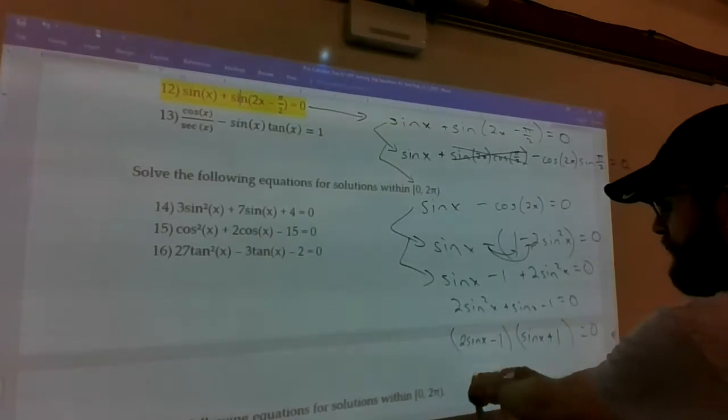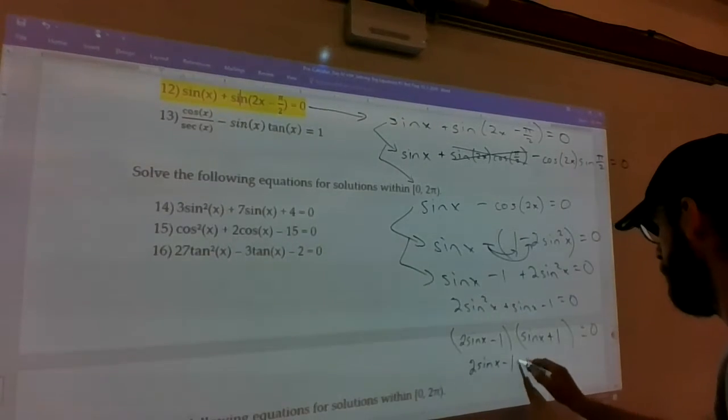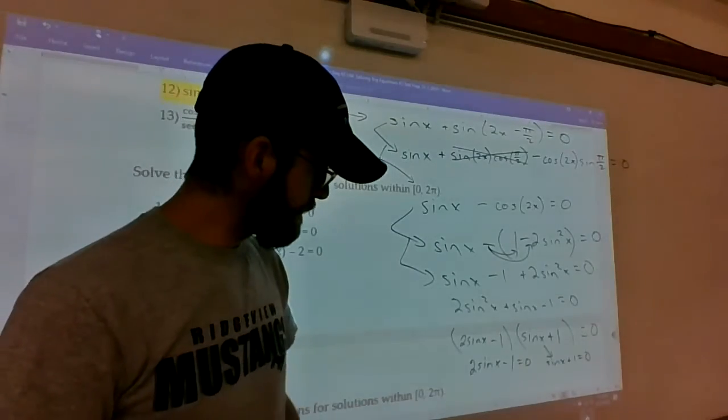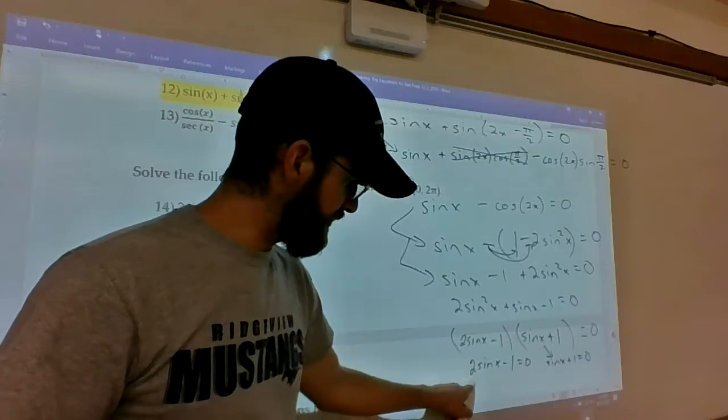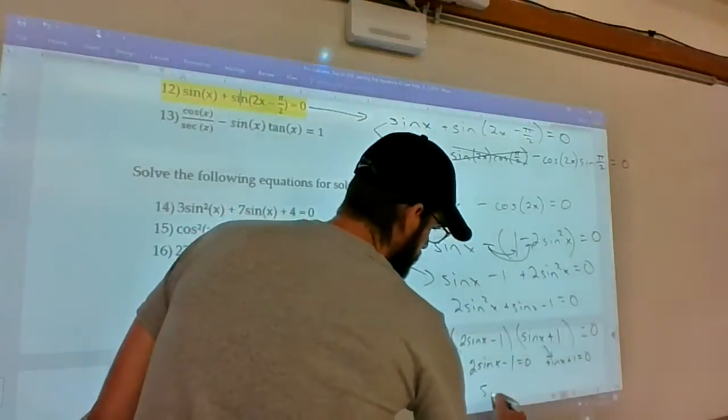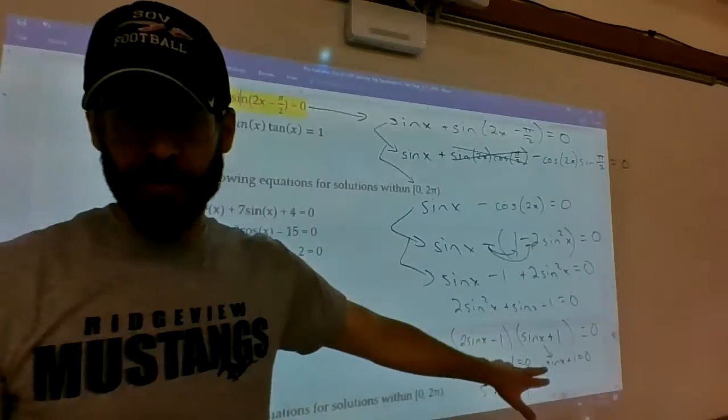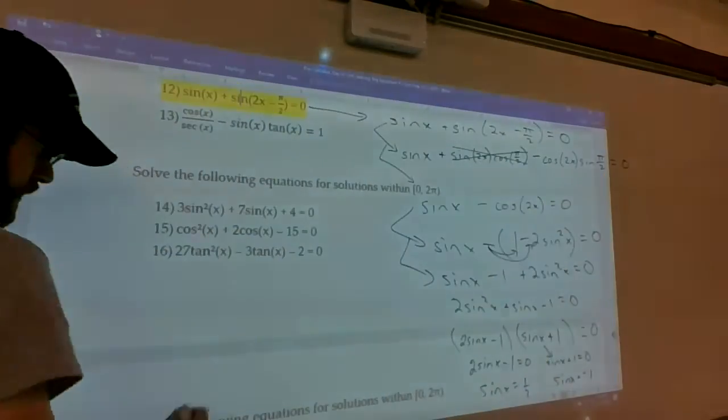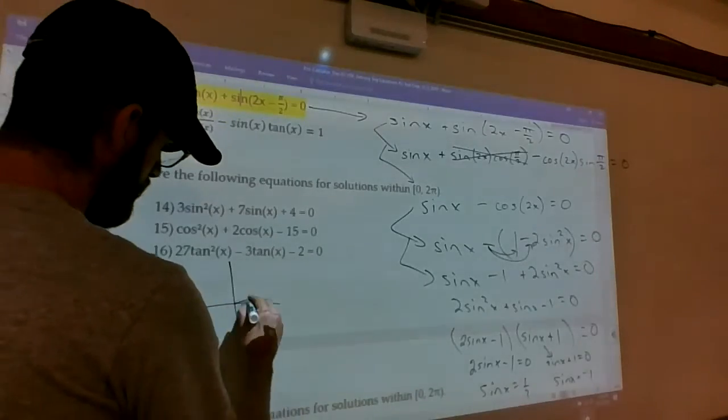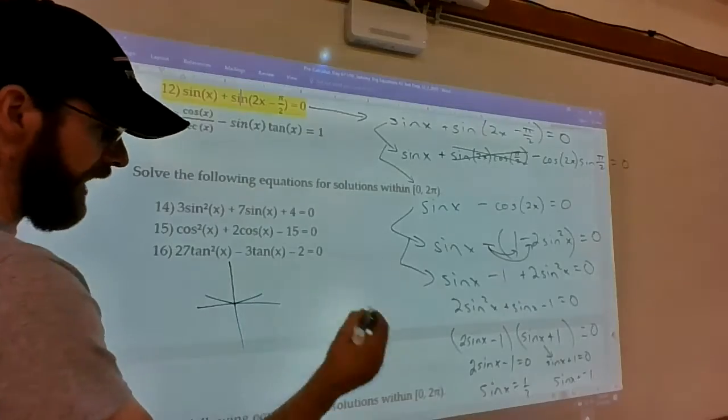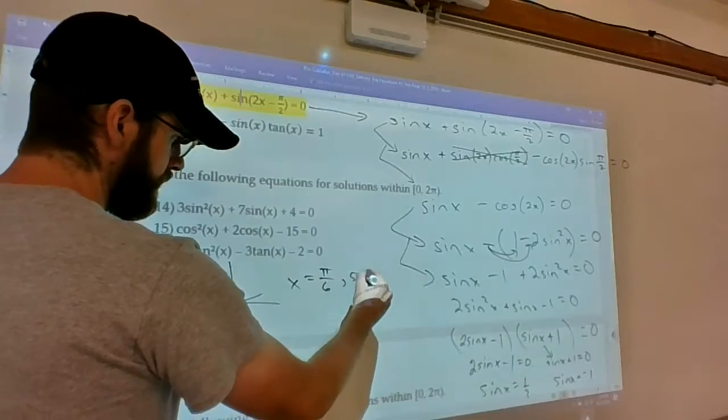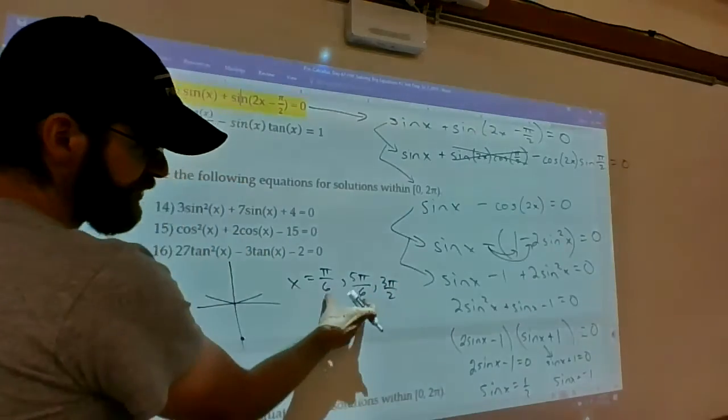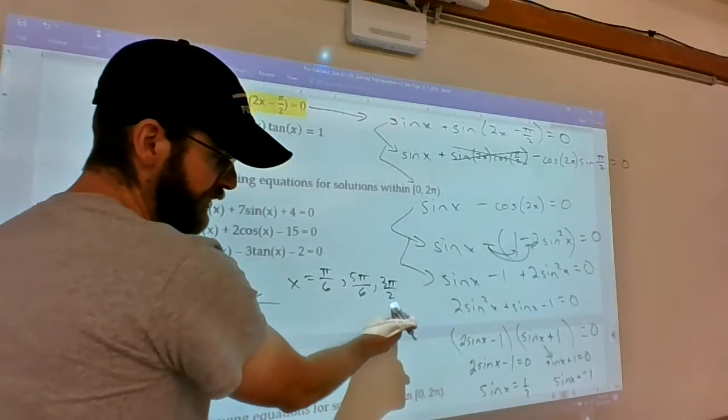So then, this quantity equals 0, as does this one. Add 1 to both sides. Divide by 2. Sine equals 1 half. On the second one, subtract 1 from both sides. You get sine equals negative 1. And we just ask ourselves, where does sine equal a half? In quadrant 1 and quadrant 2, it's going to be the pi over 6s. 5 pi over 6. Where does sine equal negative 1? Down here, 3 pi over 2. So these two solutions were from sine of x is equal to a half. This solution was from sine of x is equal to negative 1.